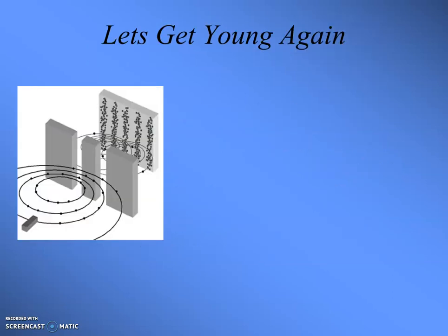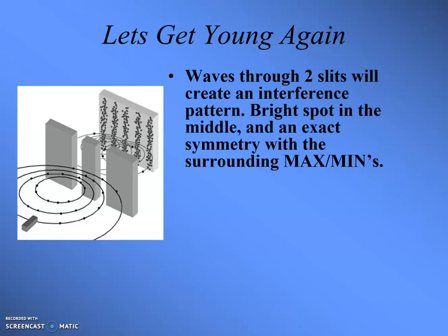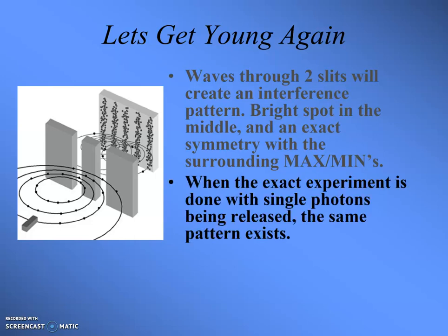Let's go back to the Young's experiment you've done, where light or particles go through two openings and make an interference pattern. Waves go through two openings, make the interference pattern, get the maxima — you've reviewed this already. Now, when the exact same experiment is done with single photons, you still get an interference pattern, which makes no sense, because it's an interference pattern and at minimum you need two things to interfere.